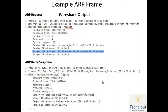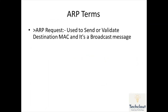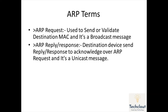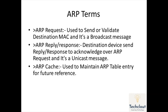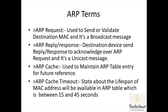Now let's discuss some ARP terminology. ARP request is used to send and validate the destination MAC address; it is always a broadcast message. ARP reply, or ARP response, is used by the destination device to acknowledge the ARP request; it is always a unicast message. ARP cache is used to maintain the ARP table entries of MAC addresses for future communication with known devices.